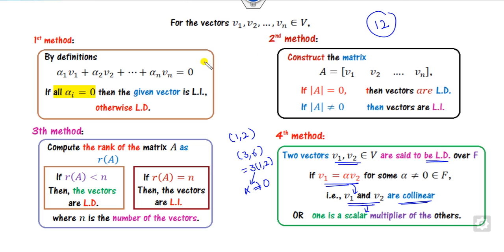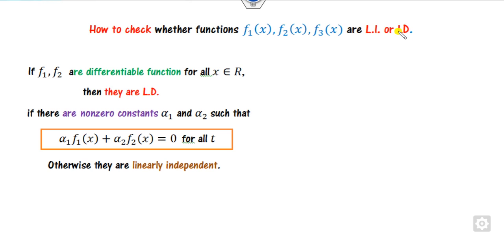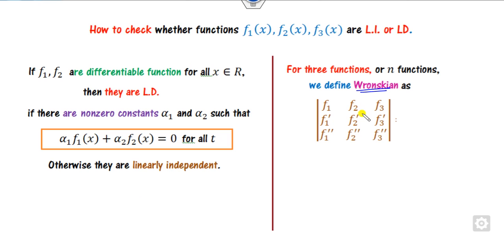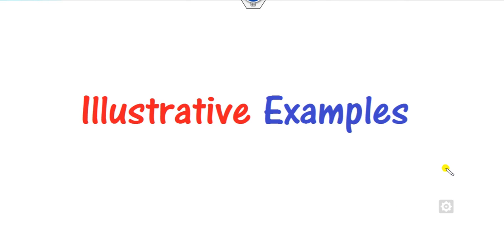For functions such as f1 = sin(x), f2 = e^x, etc., the first method similarly applies: write alpha_1*f1 + alpha_2*f2 + ... = 0 for all t; if all alpha_i's are zero, it is LI. For more than two functions, we can construct the Wronskian matrix with f1, f2, f3 and their successive derivatives. If the Wronskian is zero for all x in the domain, we say LD; if it is non-zero for some value of x, they are LI.